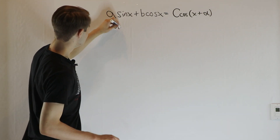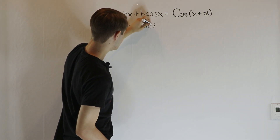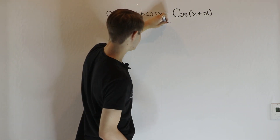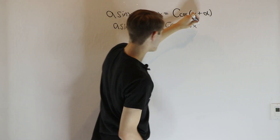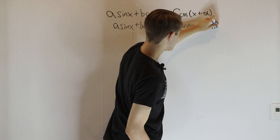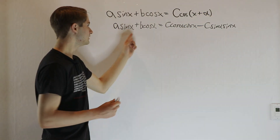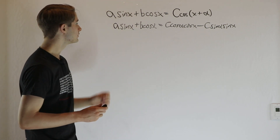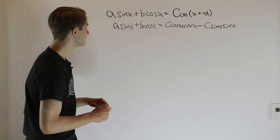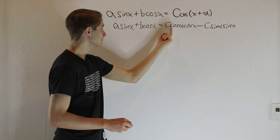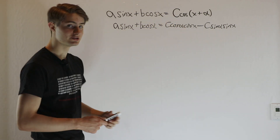So what this equation means is we have a sine x plus b cosine x equals c cosine alpha cosine x minus c sine alpha sine x. And if we want these two things to be equal all of the time, we know that the coefficients near each trig expression have to be the same. So we know that b is going to have to be the same as c cosine alpha, so that these cosine x's always have the same coefficient.